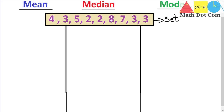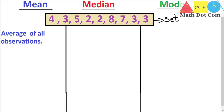We will start with the mean, which is the most common measure of central tendency. It gives you a single value when you have a set of data. Mean is defined as the average of all the observations in a data set. In statistics, the word 'average' is replaced by 'arithmetic mean' or simply 'mean.' The method is the same: addition of all values divided by the count.